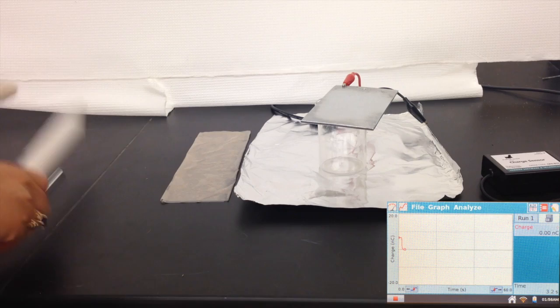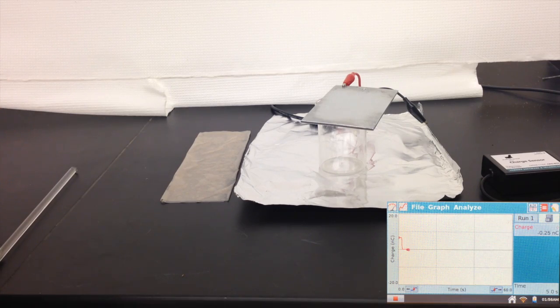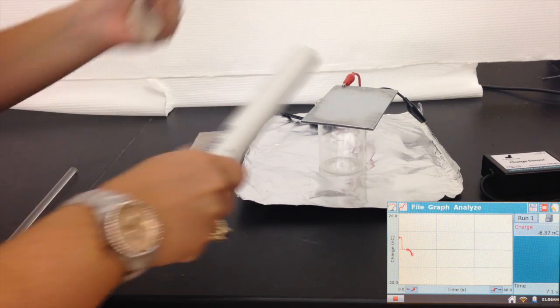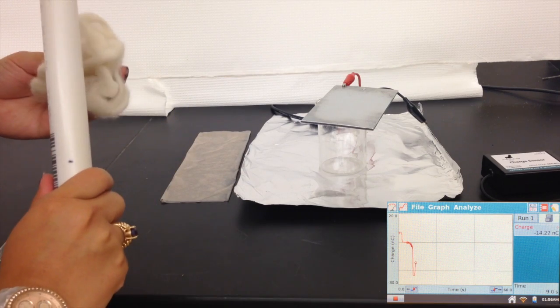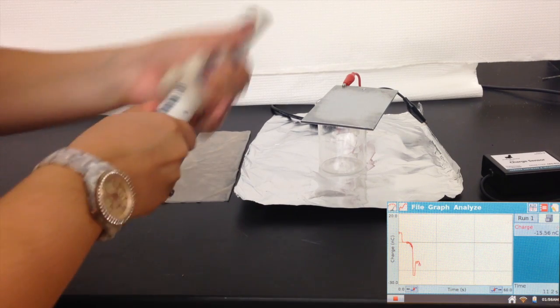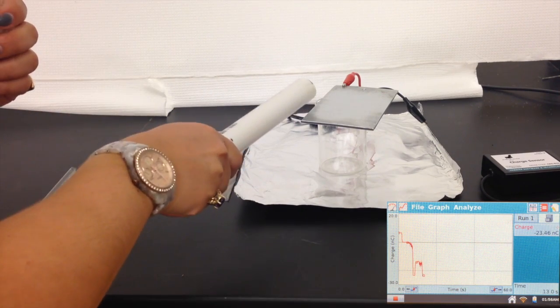We begin by zeroing the charge sensor. Next, we rub the PVC pipe and the wool together in order to charge each. When we press the PVC pipe to the zinc plate, we can clearly see that the PVC pipe was negatively charged.